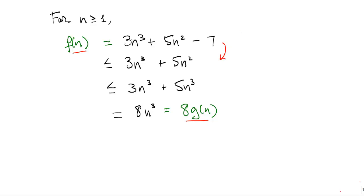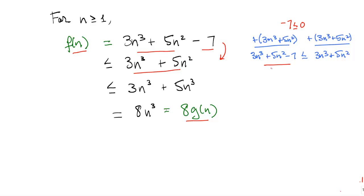In the first inequality, we just drop the minus 7 term. Dropping a minus 7 term causes an expression to get larger, so 3n³ + 5n² is greater than or equal to 3n³ + 5n² - 7. More concretely, we start with the inequality that minus 7 is less than or equal to 0, then add 3n³ + 5n² to both sides. The resulting inequality is exactly the first inequality in the proof.